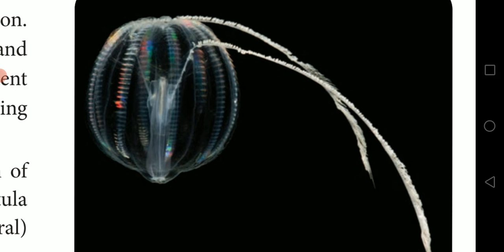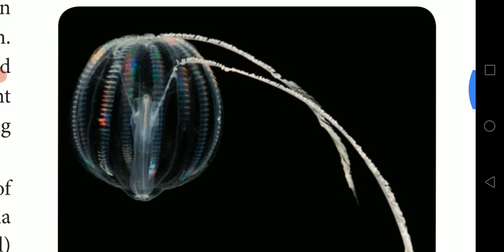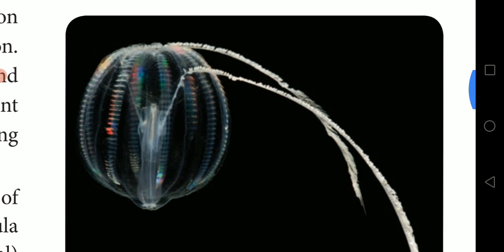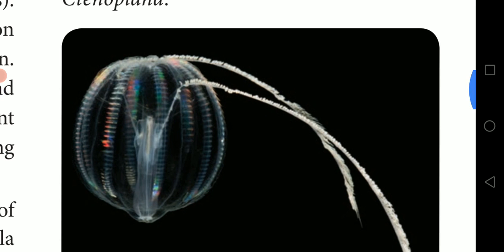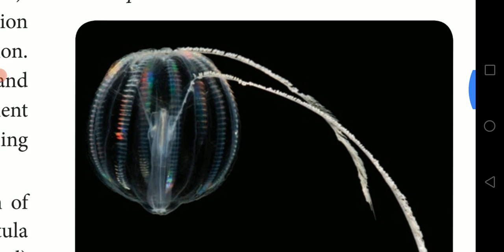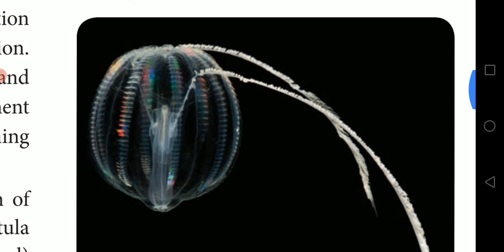The example of Ctenophora is Pleurobrachia. This organism has eight external rows of ciliated comb plates — you can see rows lined like dot-like structures from bottom to top in the image. Because of these comb jelly rows, they are commonly called comb jellies or sea walnuts.